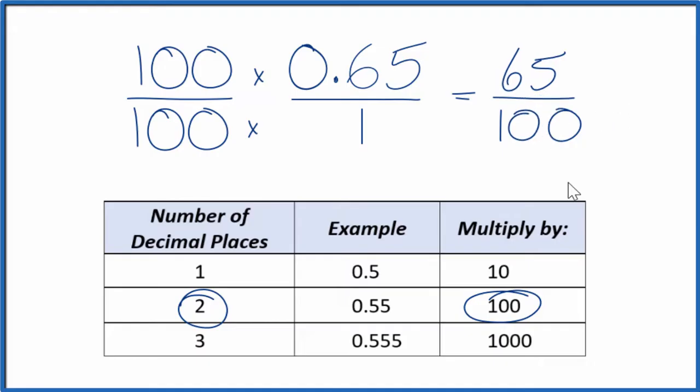So we end up with 65 over 100 as being the fraction for the decimal 0.65.